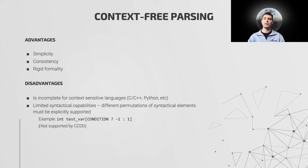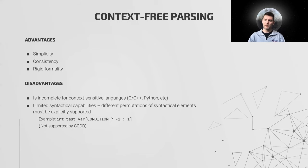For example, placing a ternary operator inside array indices provides a solution for compile-time value checking that does not require the use of static assert. However, this permutation of syntactical elements must be explicitly supported in CCDD and is not, and is therefore not available.